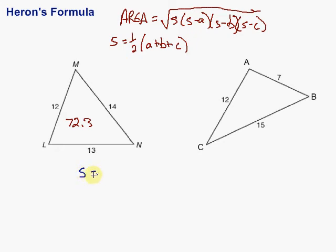The first step is going to be to find the perimeter and then take half of it. So s is equal to 1 half times (12 plus 7 plus 15). 12 plus 7 is 19 plus 15 would be 34, and then we take half of that, so s equals 17.